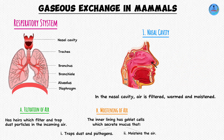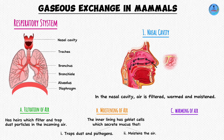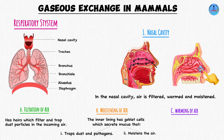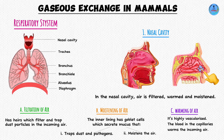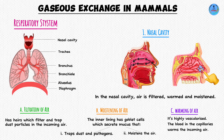Moving on to the third activity, where the air is warmed. This happens through the blood capillaries, which are the smallest vessels in our body. Blood carries heat, so when air comes into contact with the blood capillaries, it is warmed. This is important because warm, moist air diffuses faster than cold, dry air, and the tissues in the respiratory tract — especially the alveoli — are sensitive and delicate and can be easily damaged by cold, dry air. So moistening and warming the air helps to protect these tissues.